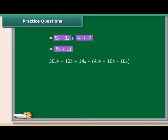Now, the question is to subtract 4ab plus 10b minus 16a from 30ab plus 12b plus 14a. We have to use the same criteria as we have used for the addition.